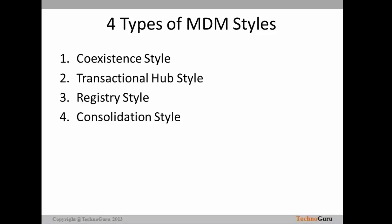There are four types of MDM implementation styles: co-existence style, transactional hub style, register style, and consolidation style. These terms are technical, so business people may not easily understand them — we also have business-friendly style names which we will see shortly. First, let's go through these four styles one by one to understand how to implement an MDM product in your business.